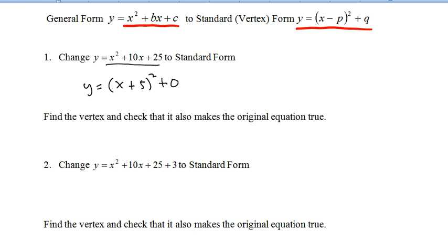Good way to make sure that you did these right: find the vertex, make sure it makes our original equation true. In this case, our vertex is going to happen at 0 squared, same as usual. So our vertex is going to be at negative 5, 0. So let's throw that into our original equation. Perfect.